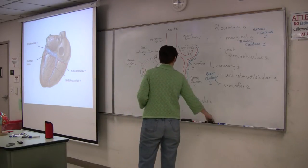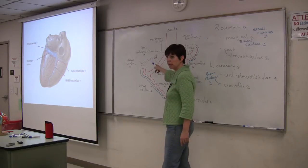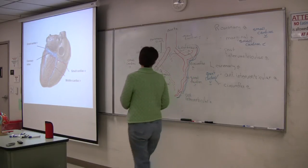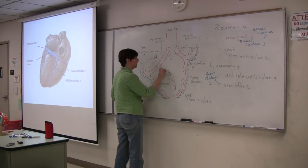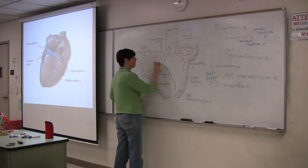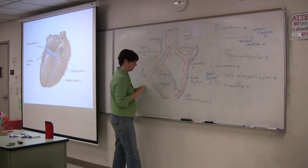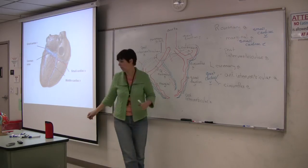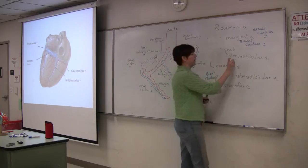And then we have one more, and that one travels with our posterior interventricular artery, and I'll draw this in a dotted line as well because it's posterior. And it's going to go into coronary sinus, and that's the middle cardiac vein. Okay, so we find the middle cardiac vein.